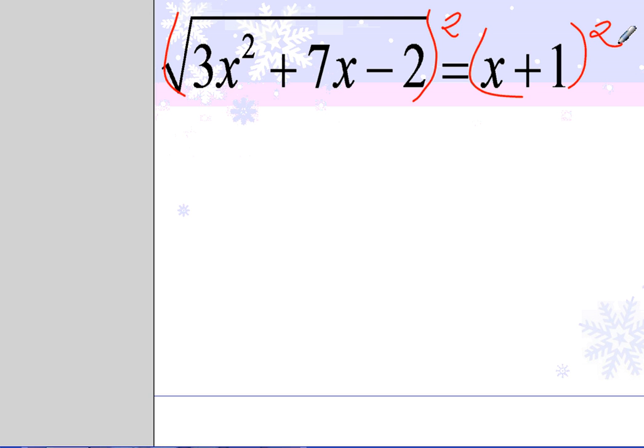On the left, the power of 2 undoes the radical. On the right, I'm using the formula for square of a binomial. So the first term squared, the two terms multiplied together and doubled, and then the last term squared.